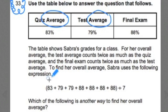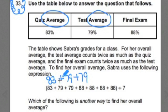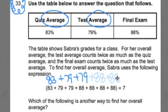We give a value of 83 for one quiz. Then for the test, that test is worth twice as much — it's going to be weighed twice as much as the quiz. So that's where Sabra got 79 and 2×79, because that one test is twice as much as that one quiz. And as for the final exam — the final exam is twice as much as the test. One test would be 2×88, but since it's twice as much, it's going to be 4×88 that she's adding to all those values.